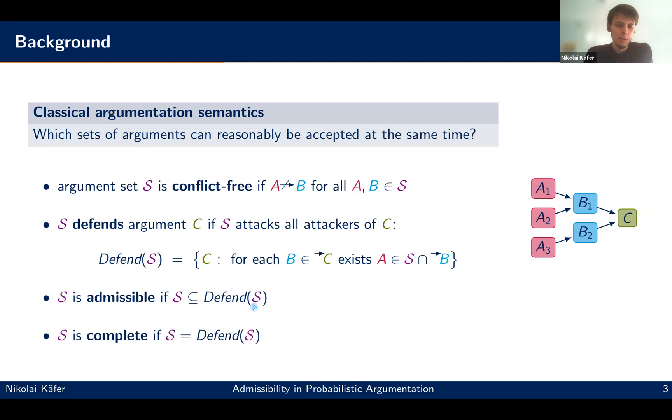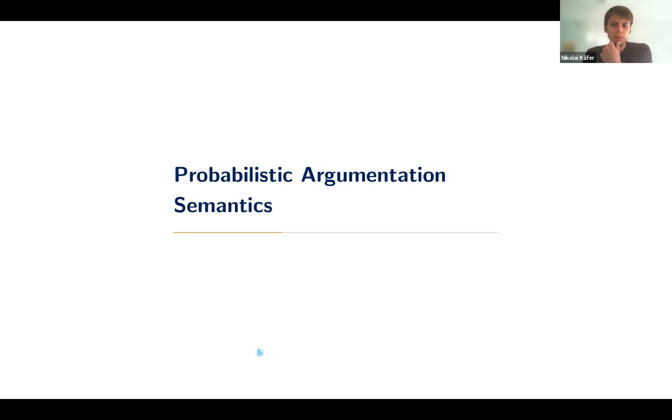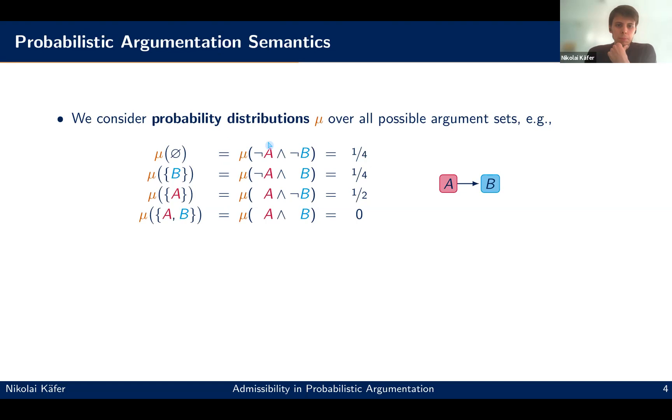And then if you go one step further, you say the set is complete, if all arguments that are defended are actually inside the set. So now the question is, what exactly is, what kind of probabilistic argumentation are we looking at? And how do we lift these concepts there?